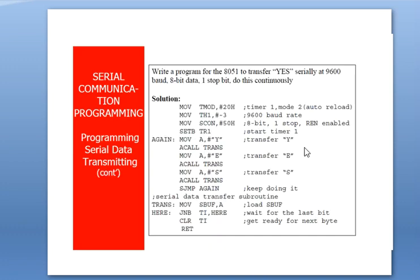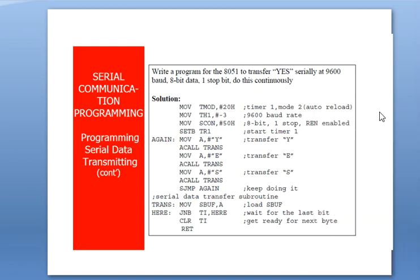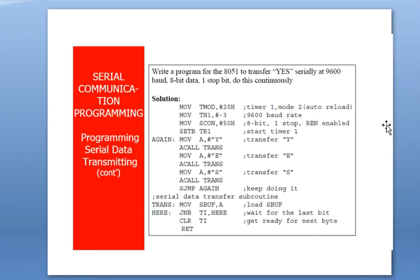Example: Write a program for the 8051 to transmit 'YES' serially at 9600 baud rate, 8-bit data, one stop bit, continuously. The program begins with MOV TMOD, #20h, selecting Timer 1 in Mode 2. Then load TH1 with -3 (FDh) for 9600 baud rate, and load SCON with 50h to configure 8-bit data framed with start and stop bits.